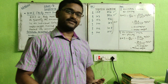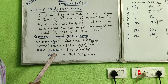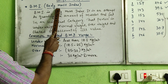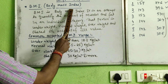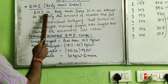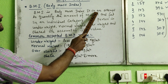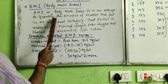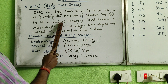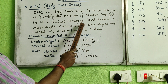So let's come to the main point. BMI — the full form is Body Mass Index. BMI is an attempt to quantify the amount of muscles and fat in an individual, and it applies to human beings as well as other animals.